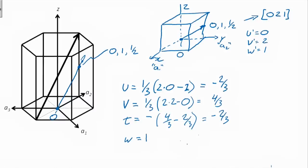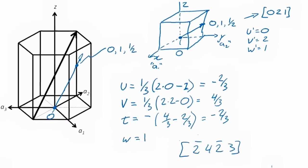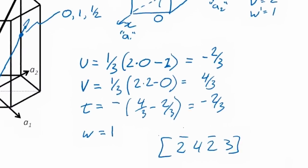So our indices are almost done. Again, we've got to clear it across to get rid of the three in the denominator. And so we're going to end up with two bar, four, two bar, three, once we've multiplied across by three. So that was fairly challenging.